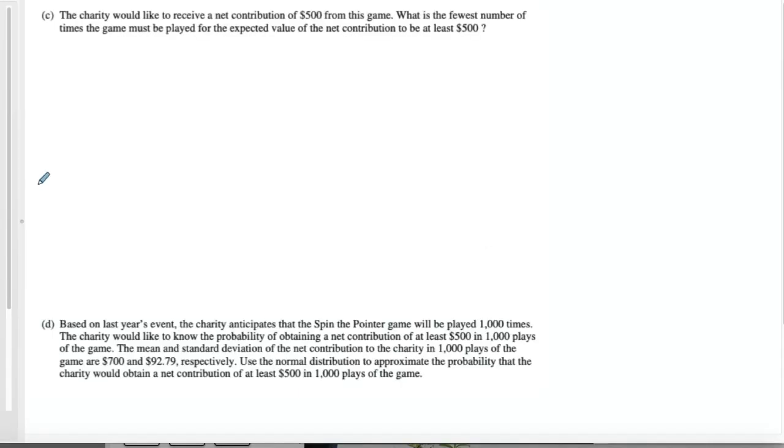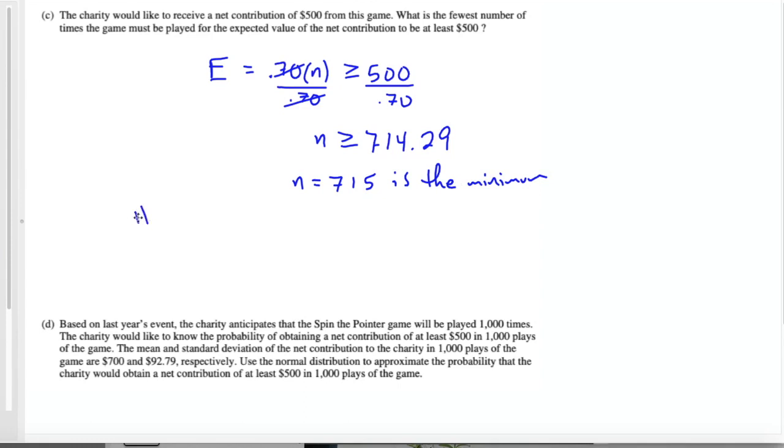Okay, part C. The charity would like to receive a net contribution of $500 from this game. What's the fewest number of times the game must be played for the expected value of the net contribution to be at least $500? So we want the expected value to be at least, which means greater than or equal to $500. So I'm going to set up an inequality here. So $0.70 times how many plays will be greater than or equal to $500? I'm going to divide both sides by 0.70, and I get n is greater than or equal to 714.29. So the minimum number of plays is 715. You have to round up to the next number because 714 is not enough. So 715 is the minimum sample size.